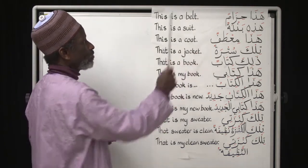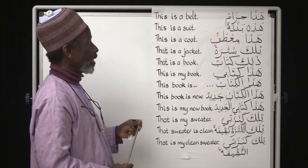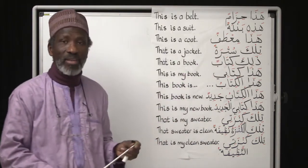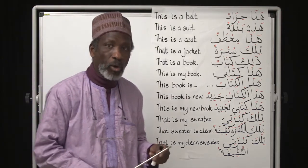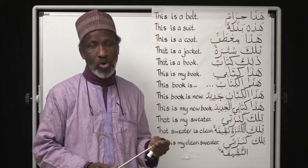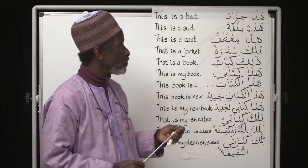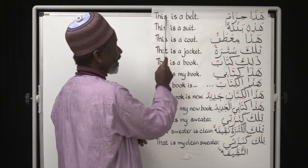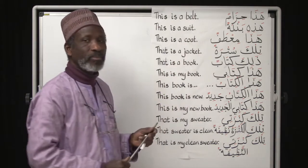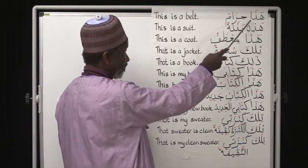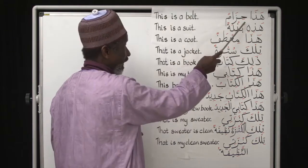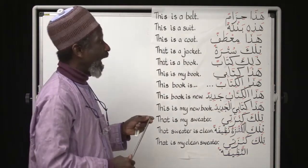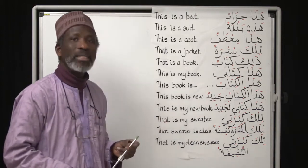Hādhā hizāmun — you know 'hizāmun' means 'belt.' These are called demonstrative pronouns. So 'hādhā hizāmun' means 'this is a belt.' When hādhā is not followed by 'al,' it will be translated as 'this is,' but when you have 'al' after it, it will become just 'this.'